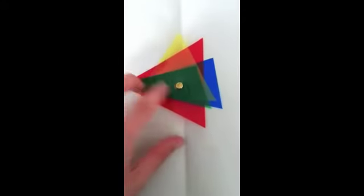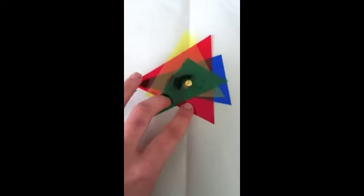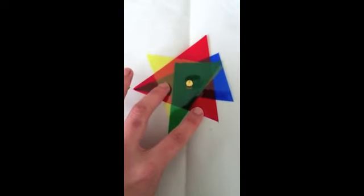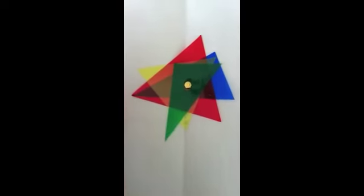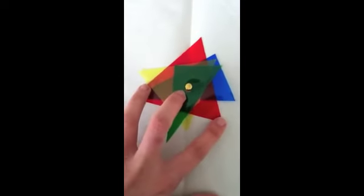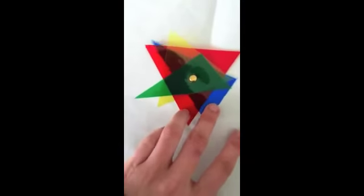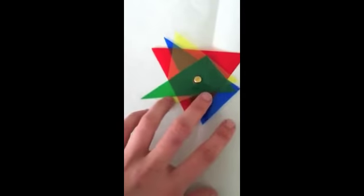And here's experimenting with different triangles, which I like the shape of more. And you can see how the colors layer together to get orange, to get a light green, to get a purple tone, and how all of those work together in different shapes.